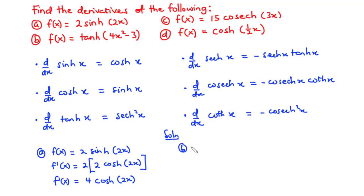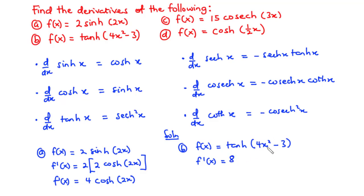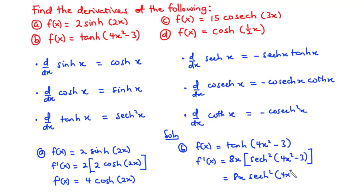Now let's move on to B. So for B, we have the function f(x) = tanh(4x² - 3). Therefore, f prime of x: we are going to differentiate 4x² - 3 with respect to x. The derivative of 4x² with respect to x is 2 times 4, which is 8, and then we reduce the exponent on x by 1, so that is x. When you differentiate tanh, you have sech squared. So that becomes 8x sech²(4x² - 3).